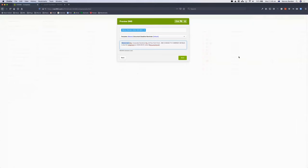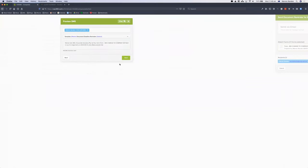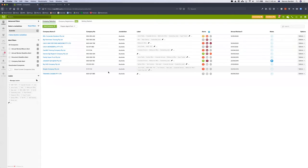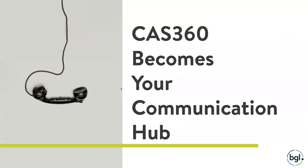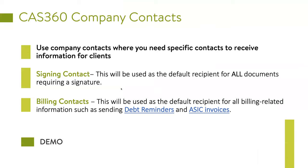There is a question regarding getting documents signed electronically through Suite Files. I mentioned in last week's webinar that we've got an Adobe Sign integration coming out soon, and we're working with Suite Files as well. Will accessing SMS system integrate with BGL? BGL's SMS system is unique to BGL — it's integrated into the product, so we don't have any API integration there. I'm going to move on now to the CAS360 company contacts.